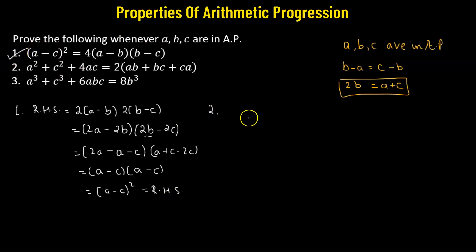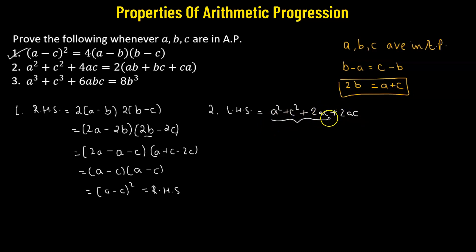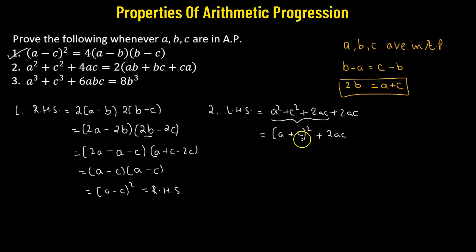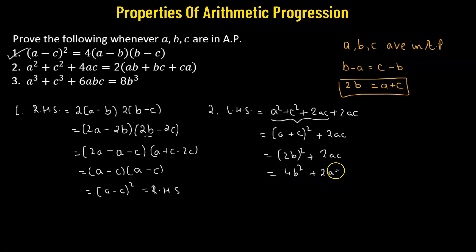Now let's go to the second proof. We'll start from the left hand side. We have a squared plus c squared plus 4ac, but we'll split 4ac into two equal parts: 2ac plus 2ac. This can be written as (a plus c) whole squared, because the expansion of (a plus c) whole squared is a squared plus c squared plus 2ac, plus 2ac. Now, in place of (a plus c) we can replace it with 2b, so we have (2b) whole squared plus 2ac, which gives us 4b squared plus 2ac.